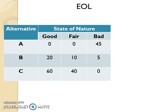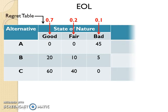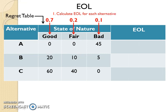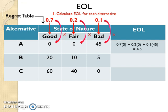Suppose that the probability of good is 0.7, the probability of fair is 0.2, and the probability of bad is 0.1. To make a decision by using the EOL method, first add a column to the Regret table for EOL and then calculate EOL for each alternative. EOL is calculated by taking the summation of the multiplication of the probability of each state of nature with the corresponding regret.